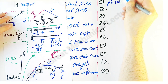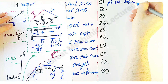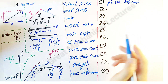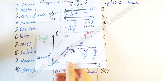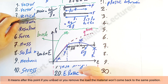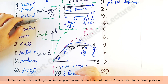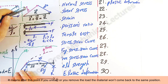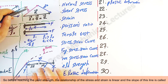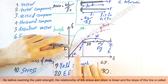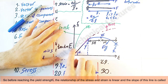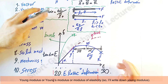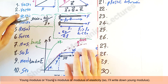After exceeding this point, it shows 'plastic deformation,' meaning if you unload or remove the load, the material won't return to the same position. Before reaching the yield strength, the relationship of stress and strain is linear, and the slope of this line is called 'Young's modulus' or 'modulus of elasticity.'